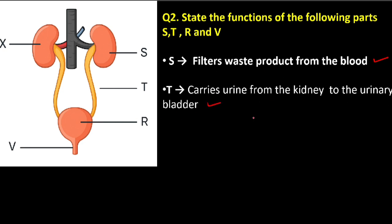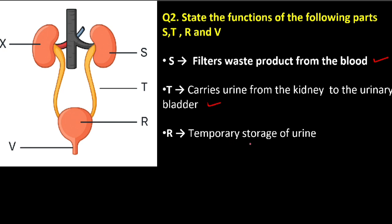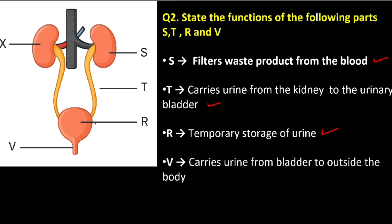Its function is to carry urine from the kidney to the bladder. What about R? R is the bladder — it stores urine temporarily. And finally we have V, the urethra. The function of the urethra is to carry urine from the bladder to outside the body — you can see it is connected to the bladder.